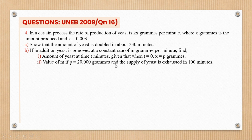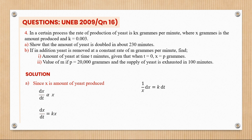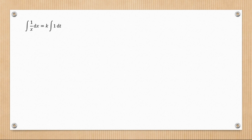In part a, since x is the amount of yeast produced, dx/dt = kx. Separating variables: (1/x)dx = k dt. Integrating: ln x = kt + c. When t = 0, x = x₀, so c = ln x₀. This gives ln x = kt + ln x₀, which is our working equation.